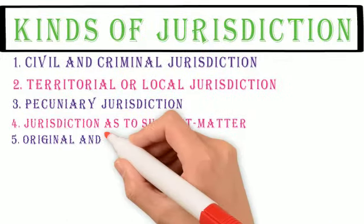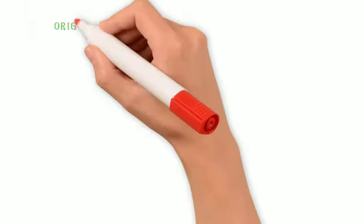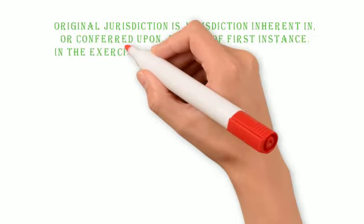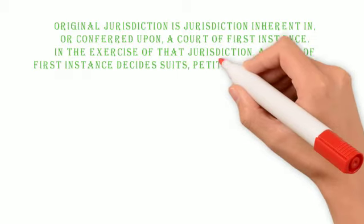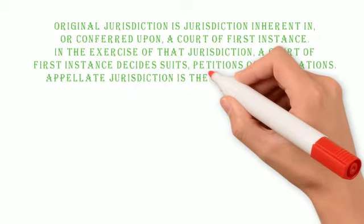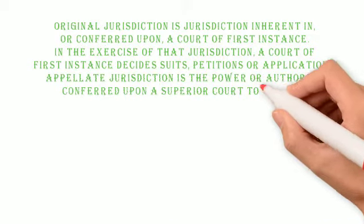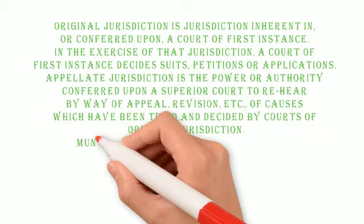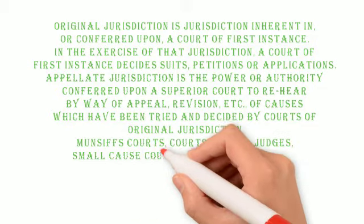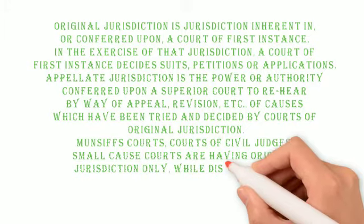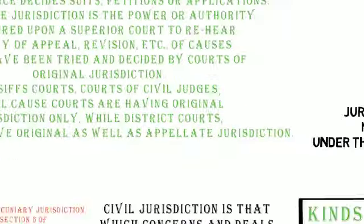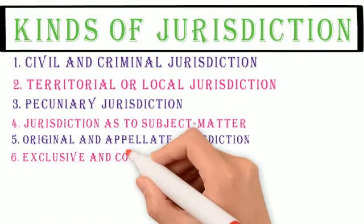5. Original and Appellate Jurisdiction: Original Jurisdiction is jurisdiction inherent in or conferred upon a court of first instance. In the exercise of that jurisdiction, a court of first instance decides suits, petitions, or applications. Appellate Jurisdiction is the power or authority conferred upon a superior court to rehear, by way of appeal, revision, etc., causes which have been tried and decided by courts of original jurisdiction. Munsif's courts, courts of civil judges, and small cause courts have original jurisdiction only, while district courts and high courts have original as well as appellate jurisdiction.